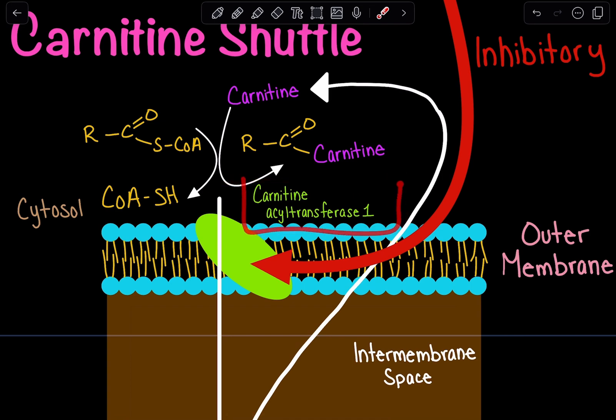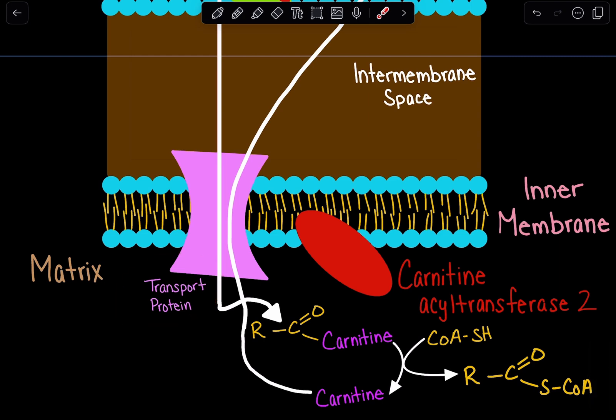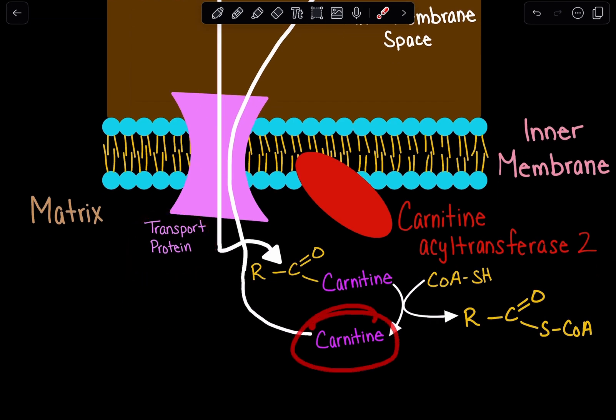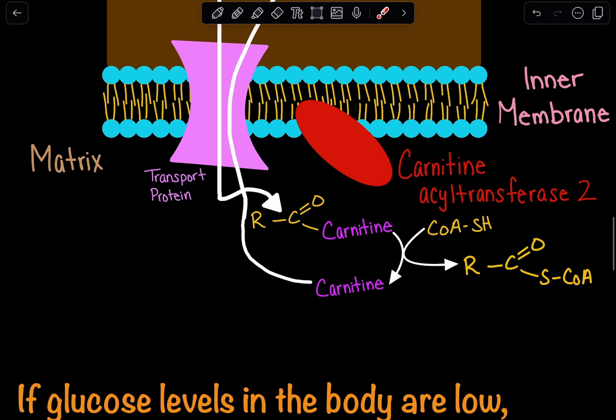Carnitine acyl transferase 1 attaches carnitine onto the fatty acid activated with coenzyme A, then transports it through carnitine acylcarnitine translocase. When it enters, carnitine is removed and the activated fatty acid is broken down via beta-oxidation to produce FADH2 and NADH, which go to the electron transport chain to produce ATP via oxidative phosphorylation.